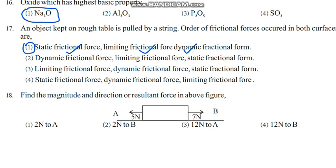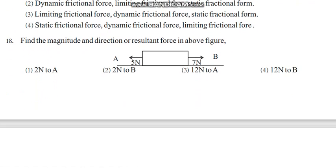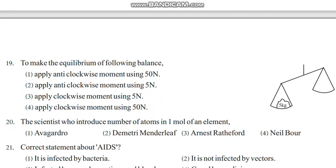Find the magnitude and direction of resultant in the above figure. 7 newton this way, 5 newton this way. When two forces are in opposite direction we have to take the difference, so 7 minus 5. Now we know the resultant is 2 newton. It is towards B - 2 newton to B, because there you have the extra 2 newton. So 2 newton to B.